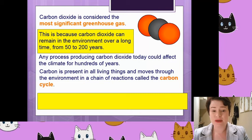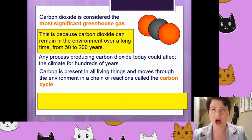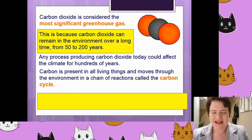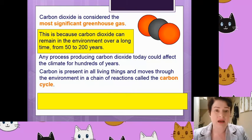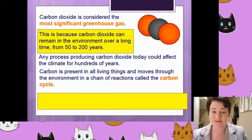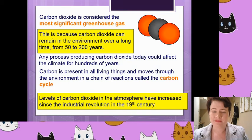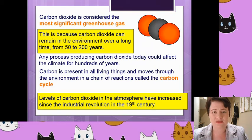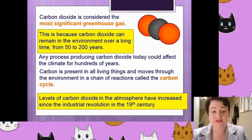Carbon is present in all living things, whether it be as carbohydrates, proteins — the key elements needed for life. We have already seen that carbon is cycled in the carbon cycle, but carbon is very important. And one thing that should be very worrying is that the levels of carbon dioxide in the atmosphere have increased quite significantly from the industrial revolution in the 19th century.